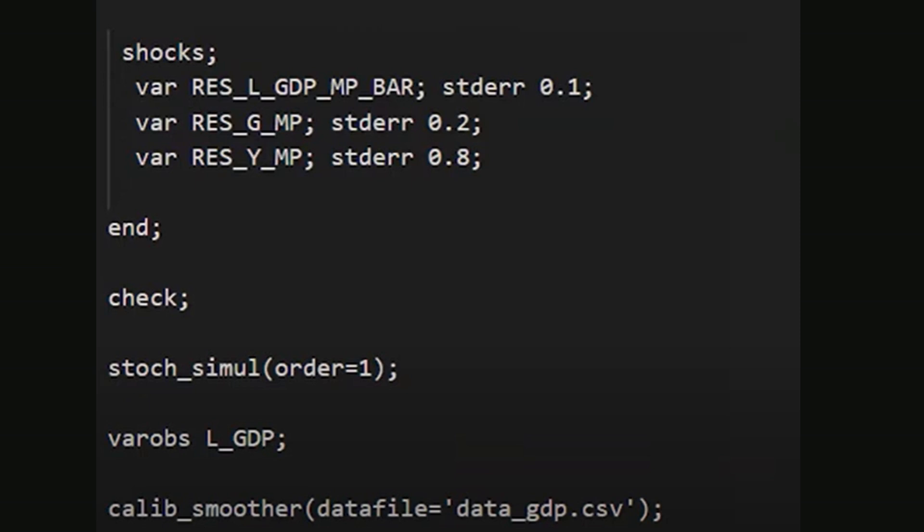Simulations are run using the stoch_simul command with the order specified in parentheses. Observable variables are declared with the keyword varobs, with GDP in log terms as the only observable variable.